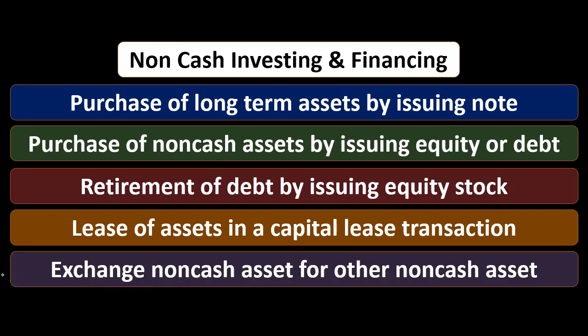Then we have the exchange of non-cash assets for another non-cash asset. That would be an exchange where we gave one asset and received another. You can again think of that as: we gave the asset, got cash, they gave their asset, got cash, and then we exchanged for cash. Anything you can break out and think — essentially we eliminated the sale and the cash transaction — that's going to be one of those types of issues that may need to be reported as non-cash items related to the Statement of Cash Flows.